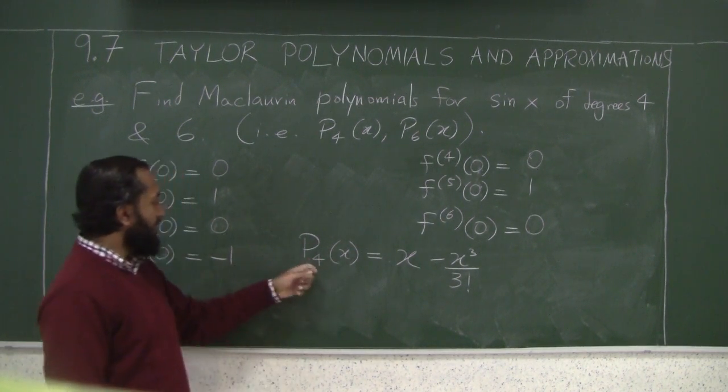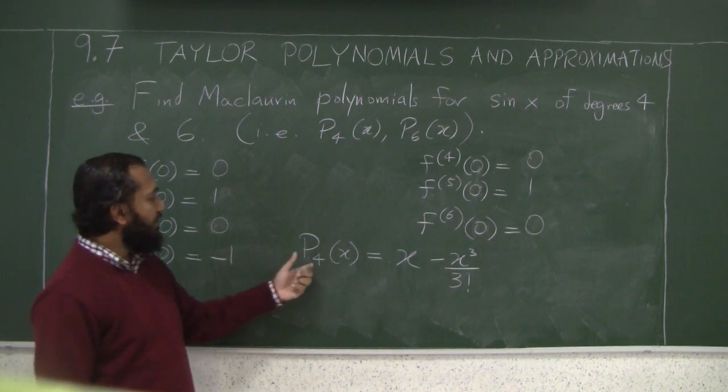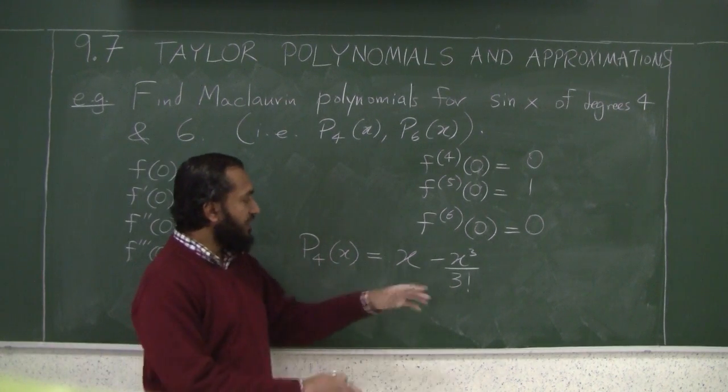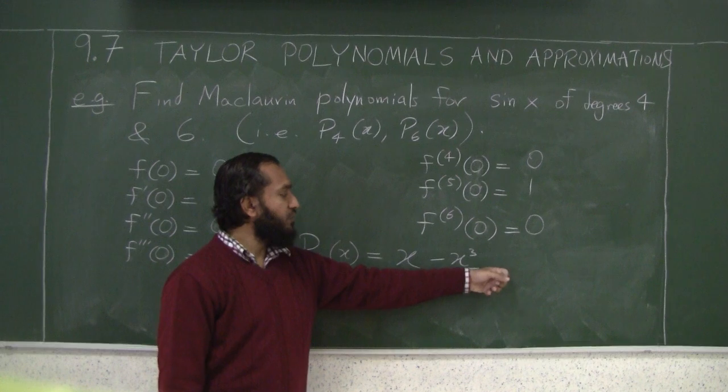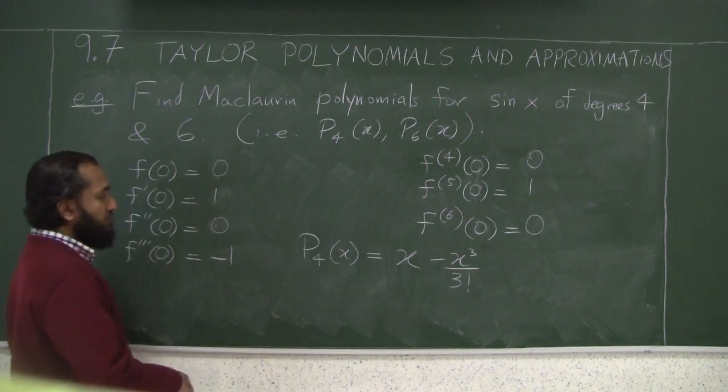Now you might be saying, wait a minute, degree 4, but there's not a degree 4 term. Well, that can happen, because when you take those derivatives and compute, you might actually get the 4th degree term to vanish.